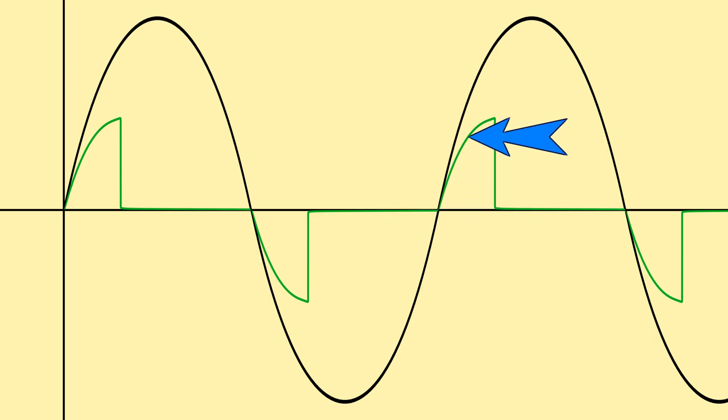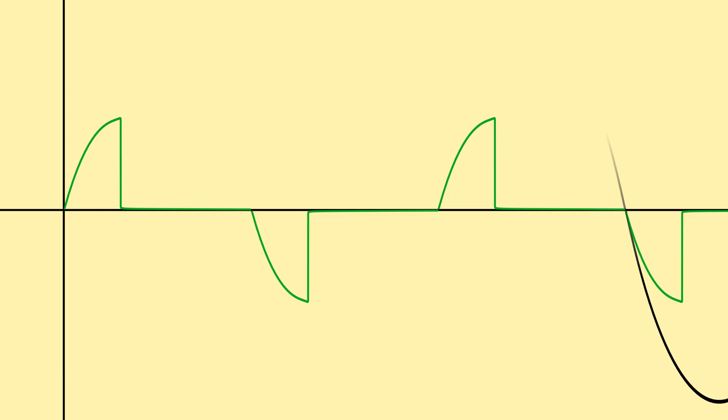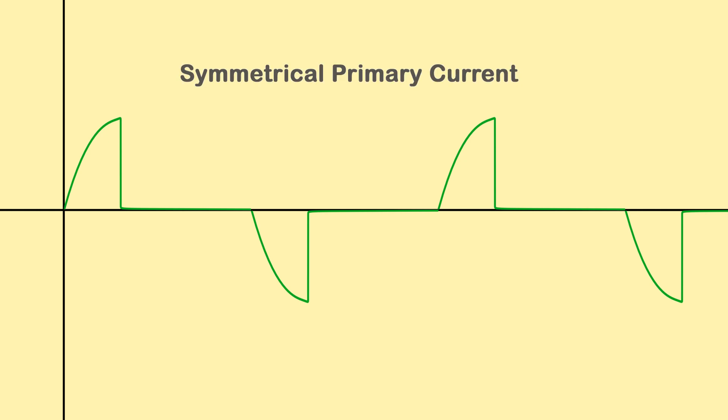This pattern will continue until the primary current drops below the saturation threshold. If we observe the secondary current alone, it appears as a distorted waveform — obviously not sinusoidal. This distortion may introduce harmonics into the secondary current. We have discussed the saturation phenomenon of a current transformer with symmetrical primary current. However, there is another kind of saturation that occurs in the core due to asymmetric current in the primary circuit. Asymmetric high current in the primary circuit is mainly caused by a system fault. That topic will be discussed in another video.